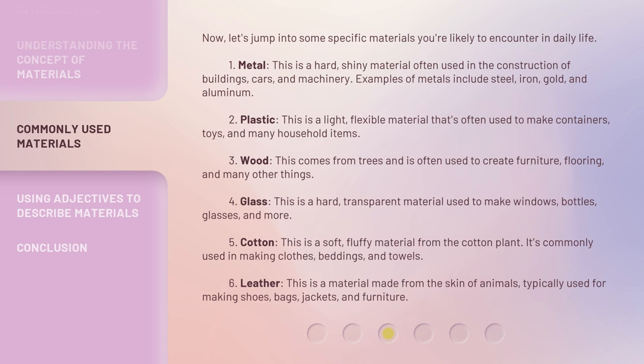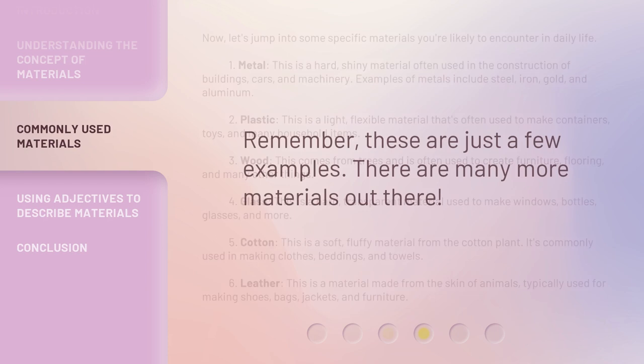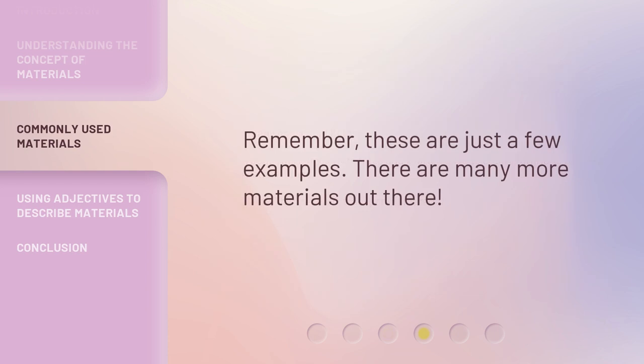4. Glass: This is a hard, transparent material used to make windows, bottles, glasses, and more. 5. Cotton: This is a soft, fluffy material from the cotton plant. It's commonly used in making clothes, beddings, and towels. 6. Leather: This is a material made from the skin of animals, typically used for making shoes, bags, jackets, and furniture. Remember, these are just a few examples. There are many more materials out there.